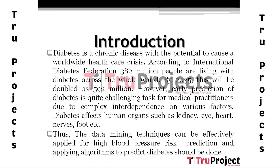When blood glucose increases, beta cells are stimulated and insulin is released into the blood. Insulin enables blood glucose to enter the cells, where it is used for energy, keeping blood glucose in a narrow range. Diabetes is a chronic disease with the potential to cause a worldwide healthcare crisis.